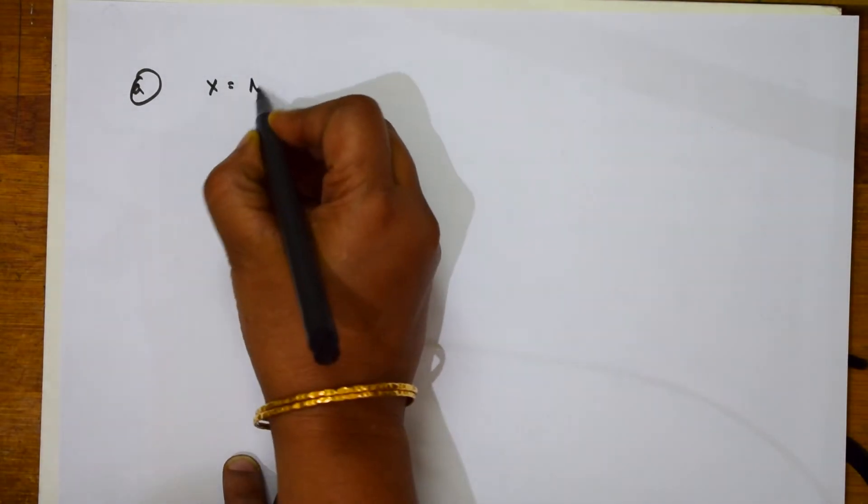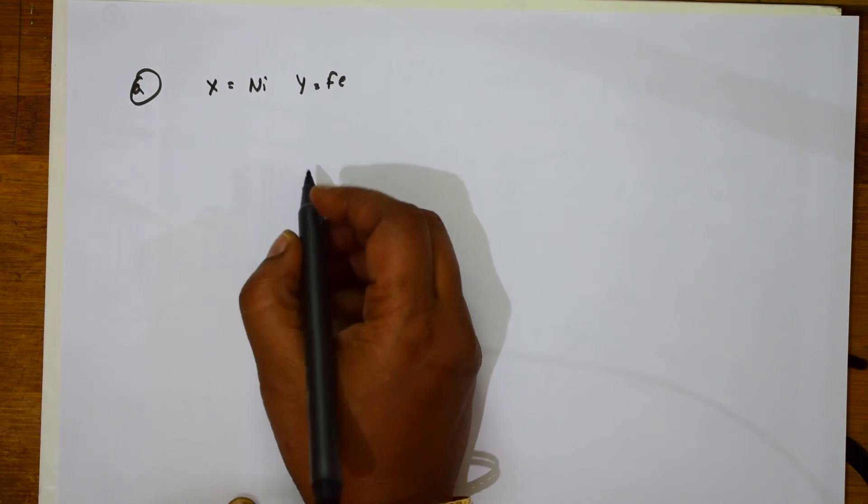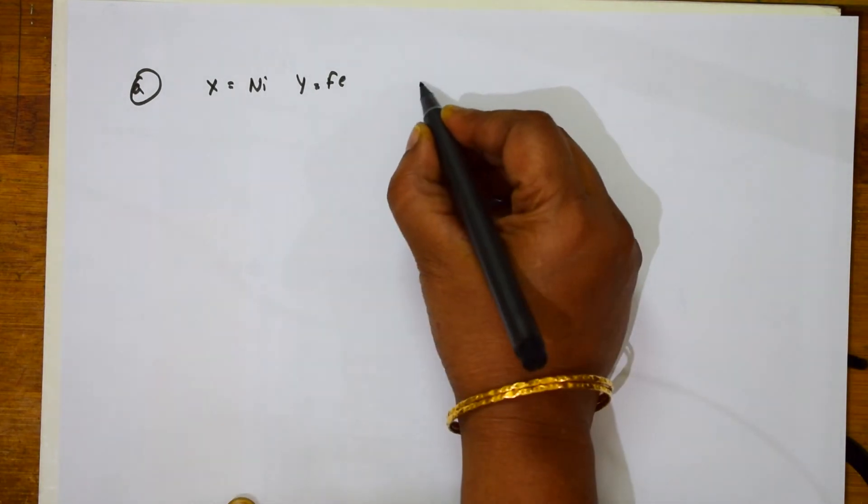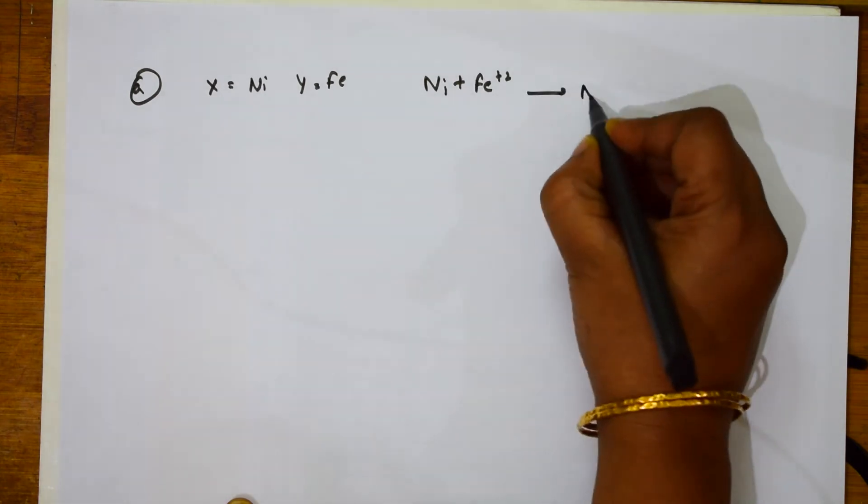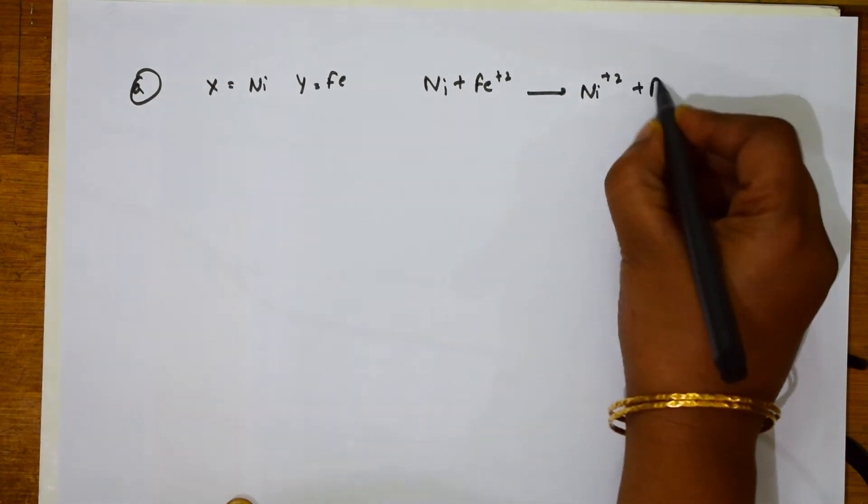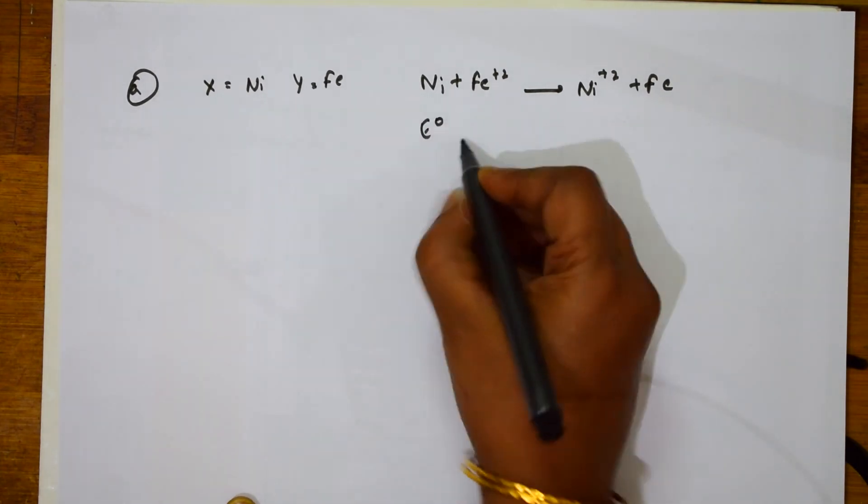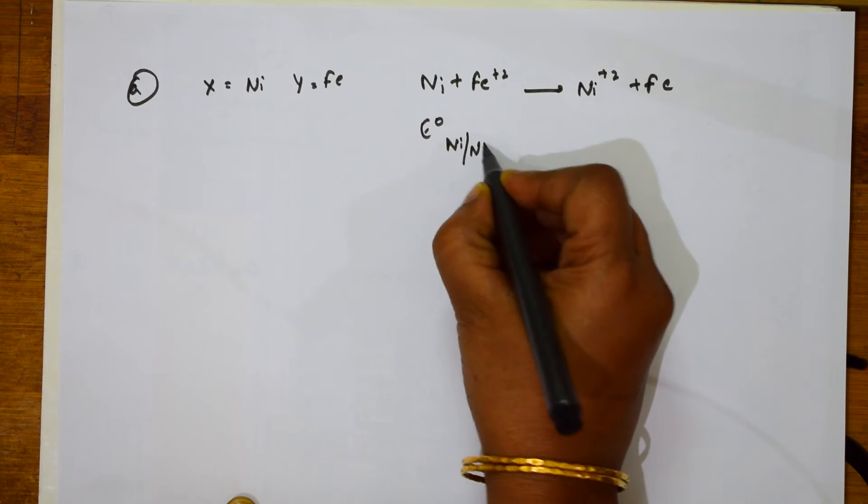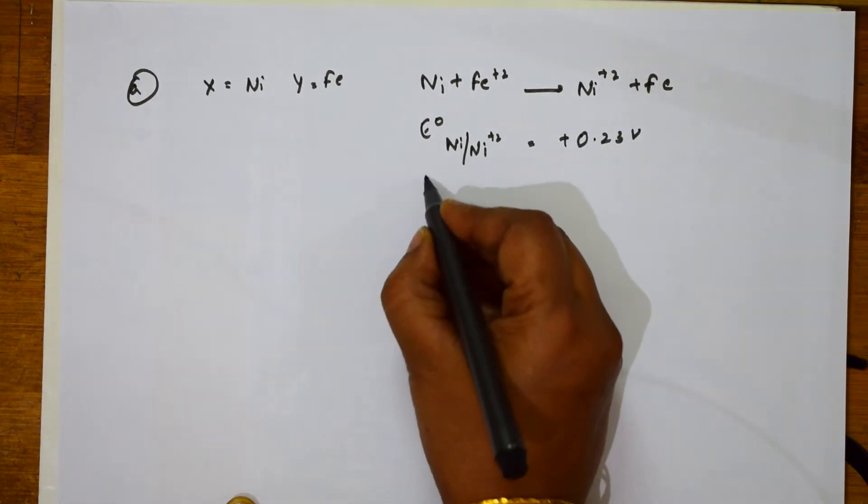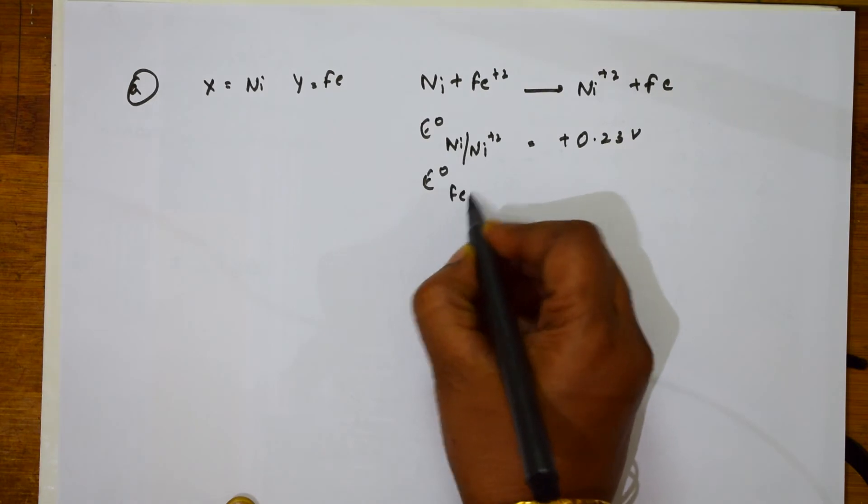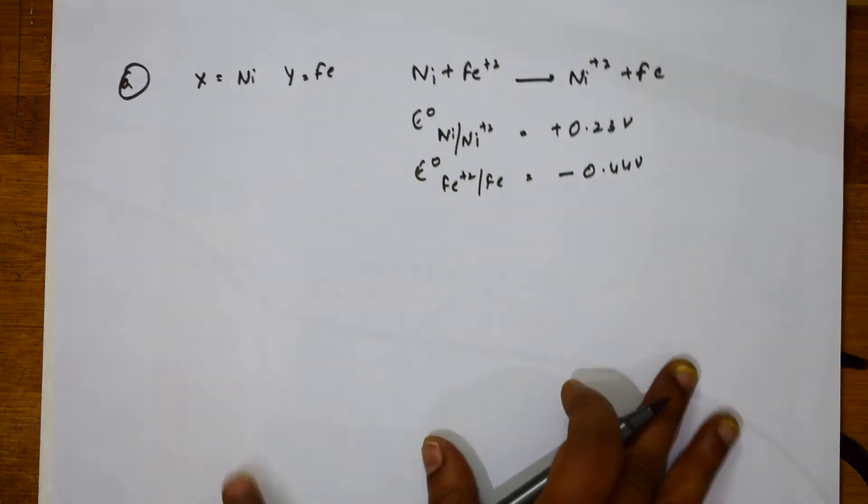When I have to take first thing A. Here what is the option they have given me? They have given me X = Ni, Y = Fe. Let me solve for that. X = Ni, Y = Fe. Let me solve. First let us write this reaction. Ni + Fe²⁺ gives me Ni²⁺ + Fe.